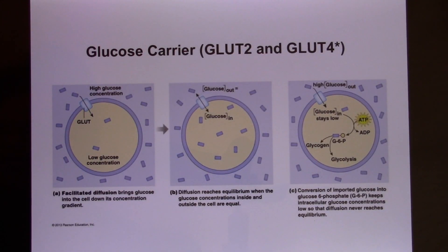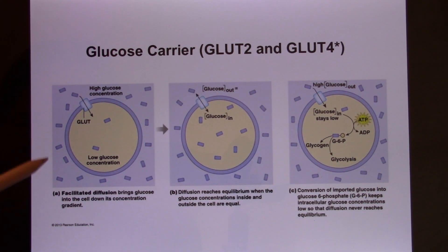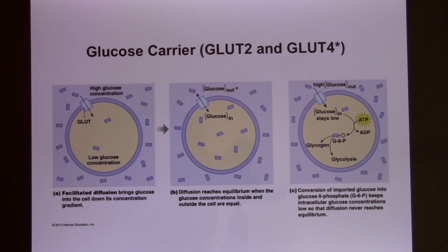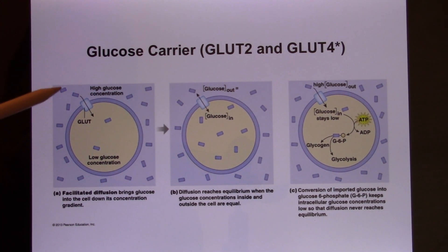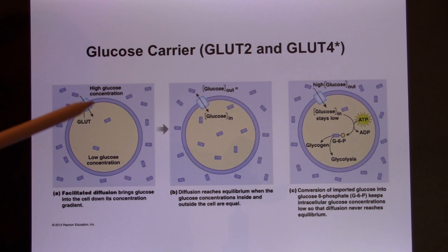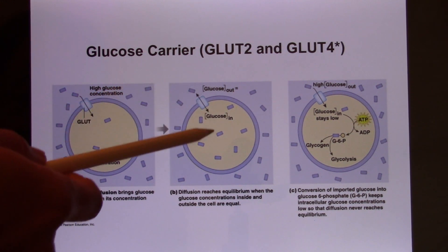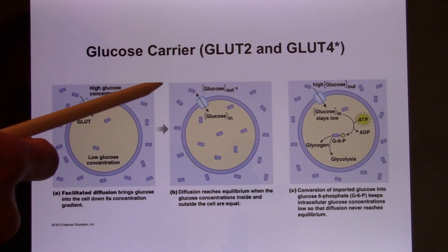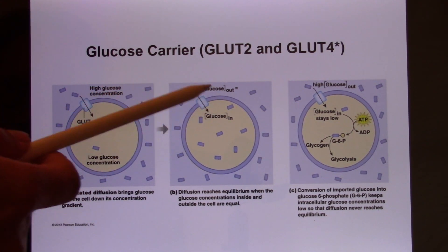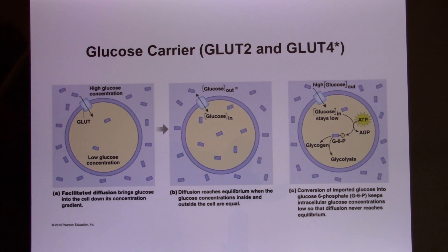Your cells need glucose. After you eat a big meal, glucose is ready to go into the cell, but it's too big to pass through the membrane directly — that's why you need glucose carriers. These glucose carriers still follow the concentration gradient, moving from high to low concentration. But as glucose moves in, the inside concentration increases and the gradient decreases, so movement slows.